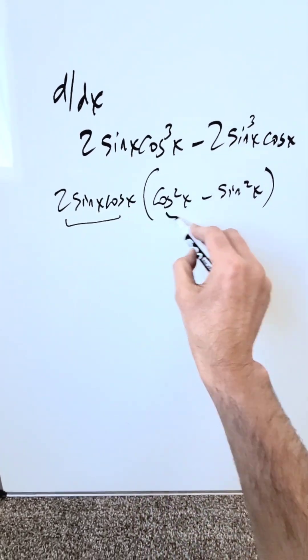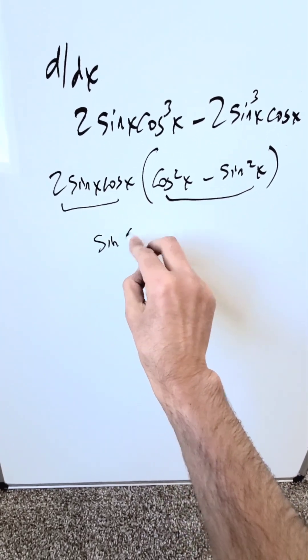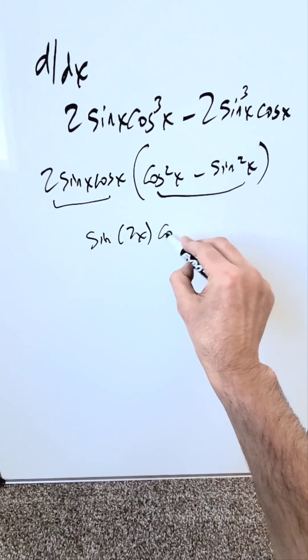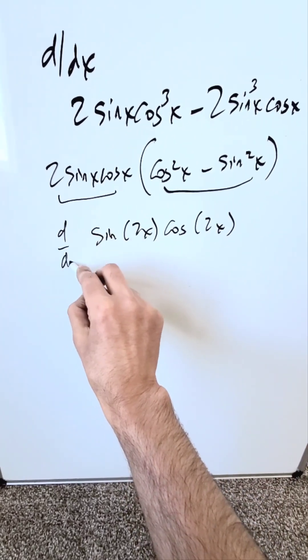Now look, I have identities which allow me to substitute. This right here is equal to sin(2x). This here is equal to cos(2x). Suddenly our complex expression becomes relatively easy.